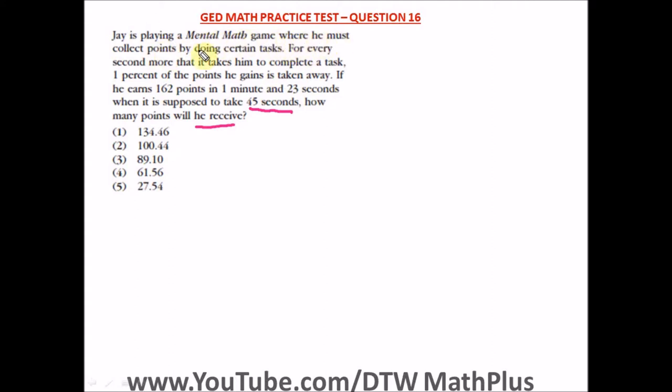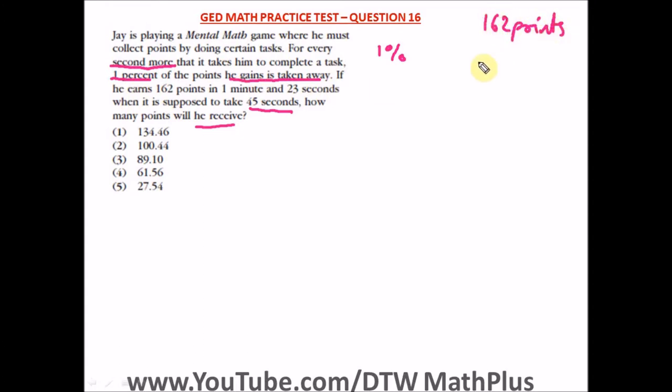So he plays a game where he must collect points by doing certain tasks. For every second more that it takes him to complete a task, 1% of the points he gains is taken away. He earns a total of 162 points in 1 minute 23 seconds, but it was supposed to take 45 seconds. How many points will he receive?